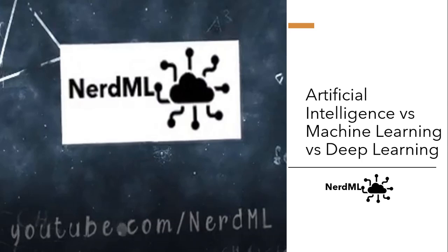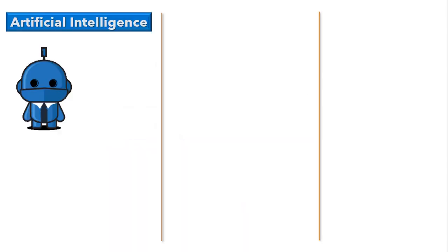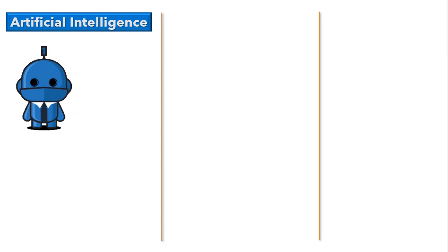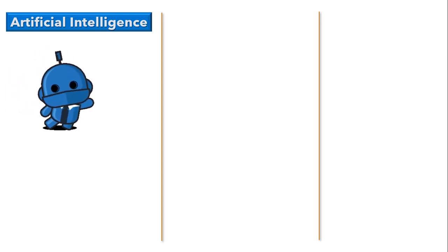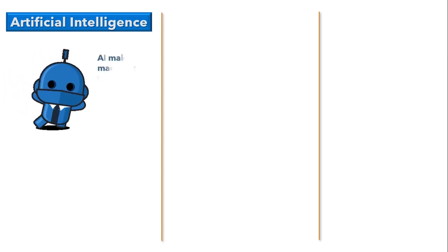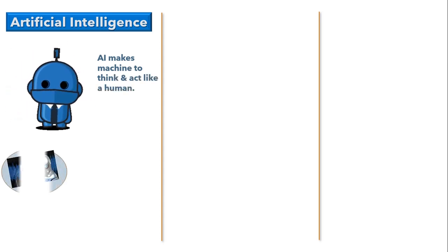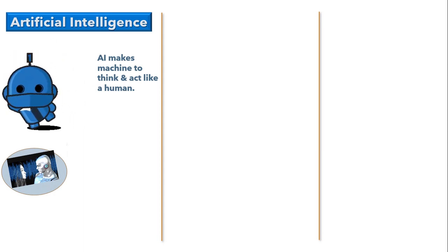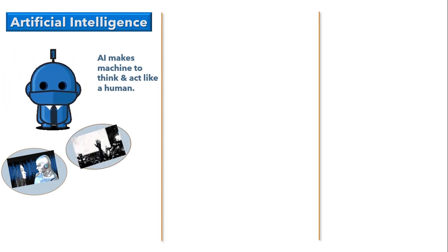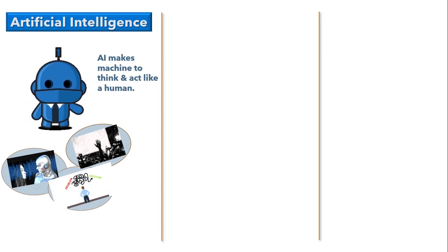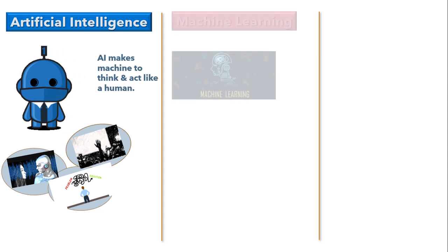We will understand in what terms we can differentiate AI, ML, and DL. Let's start with artificial intelligence first. AI basically refers to the simulation of human intelligence in machines. In simple words, AI makes machines think and act like a human — for example, machines can move and manipulate objects, recognize whether someone has raised their hands, or solve other problems.